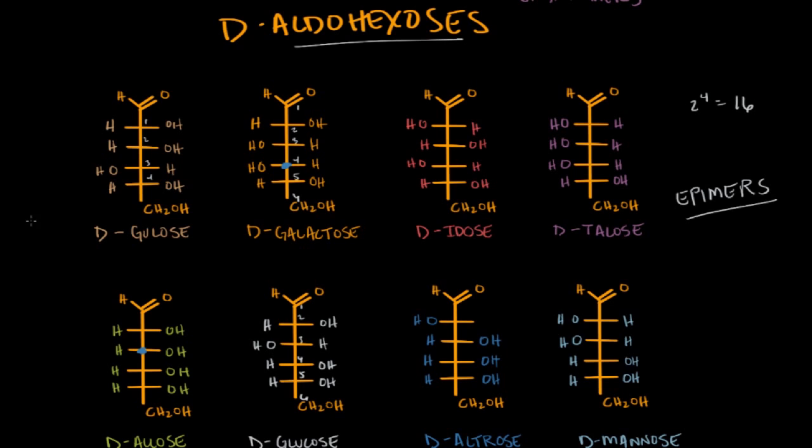Now half of those are going to have to have this OH at the bottom on the right side, and the other half would be left. So half of 16 is 8, and that's how we get to this idea that there are 8 D-aldohexoses. And that's just kind of a thought that you can use, and you can translate that into pentoses. Pentoses are going to have three chiral centers, so there's going to be ultimately 8, and there would be 4D and 4L.